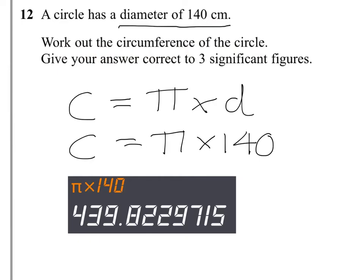I've now got to round to three significant figures. The first three numbers are 439, but the 8 tells me I need to round my 9 up. I'm closer to 440 than I am to 439 because of the 0.8.